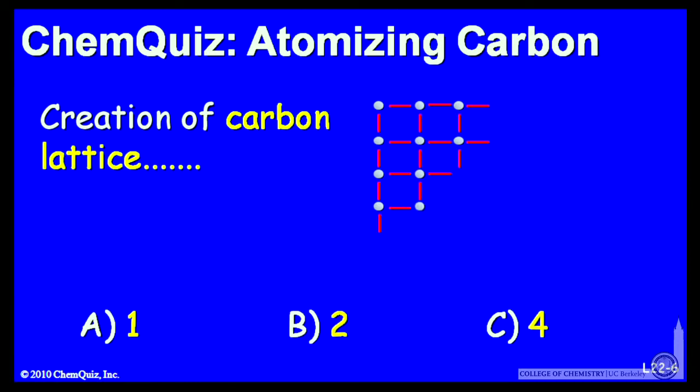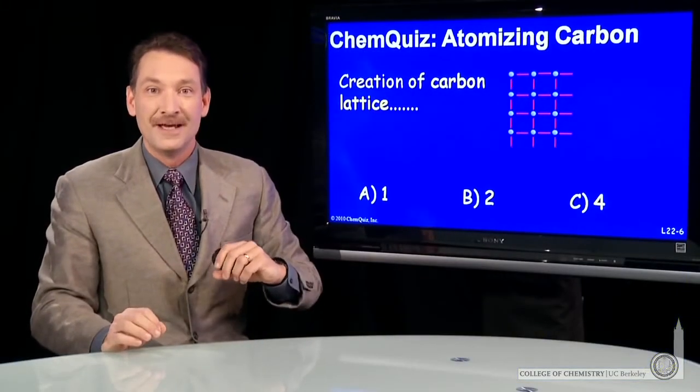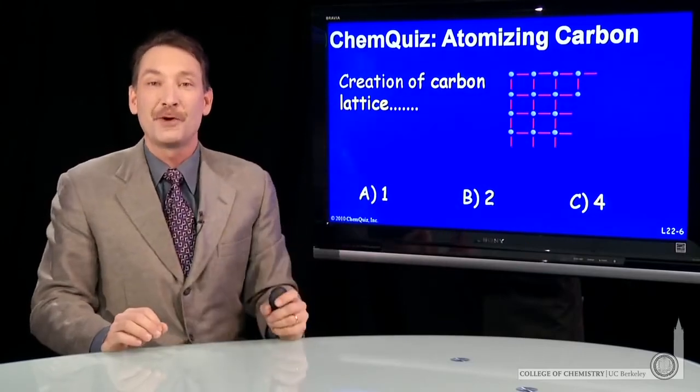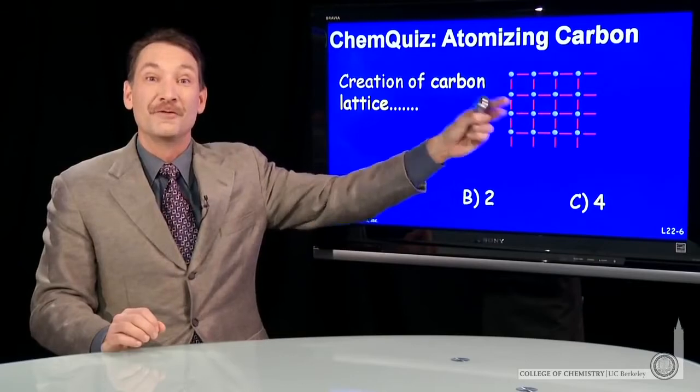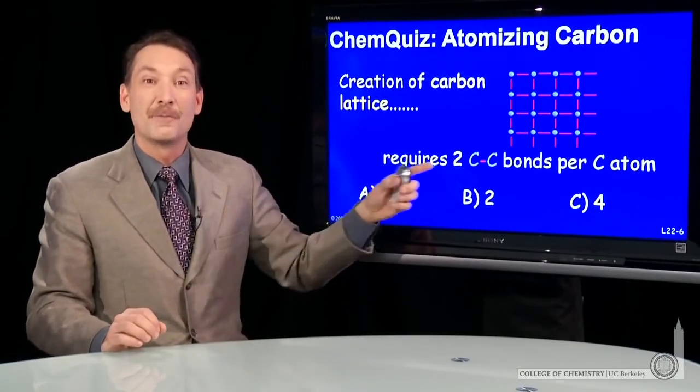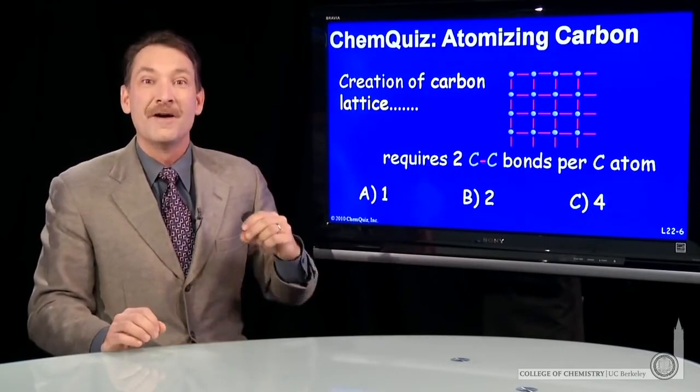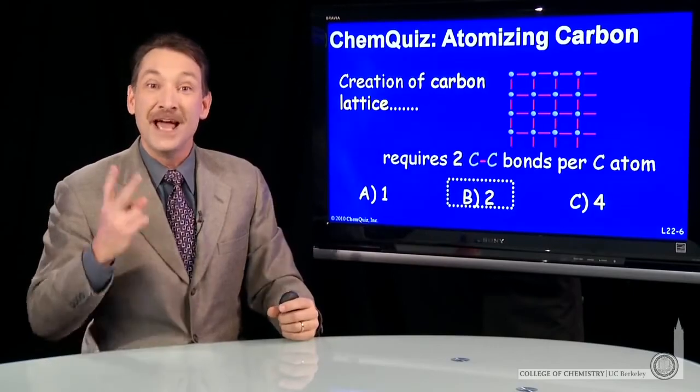So in general, if I'm breaking those bonds and doing the reverse of this, every carbon I remove, I have to break two bonds. So this is a case where looking at this reverse reaction gives me some insight on the forward reaction. It's going to require breaking of two carbon-carbon bonds for every carbon atom released. In this case, the correct answer is B, two.